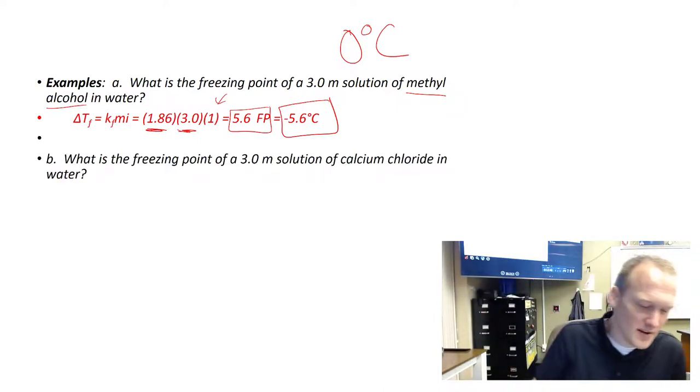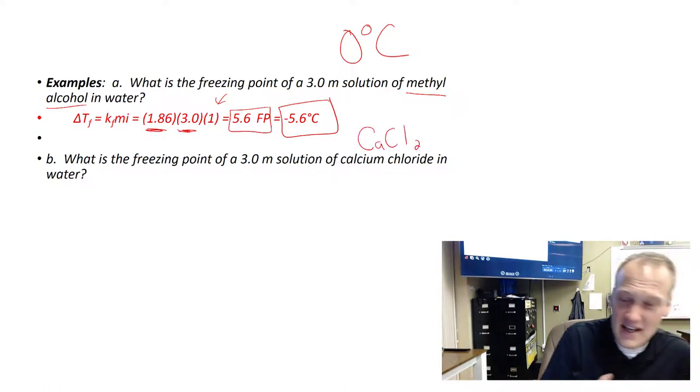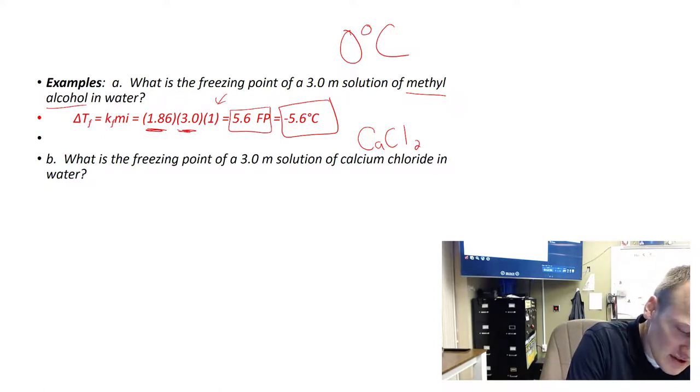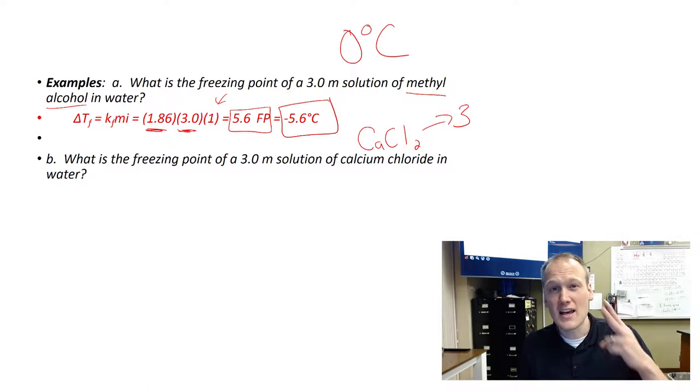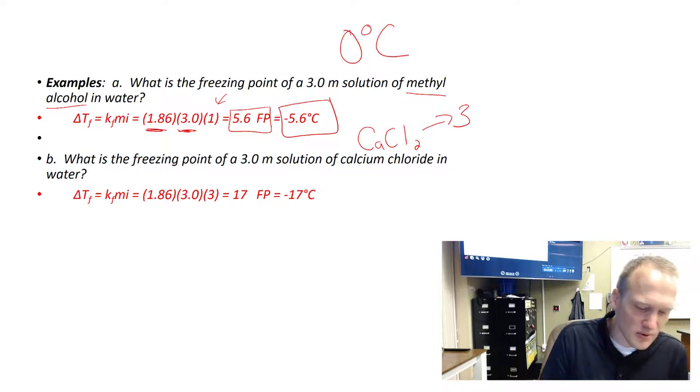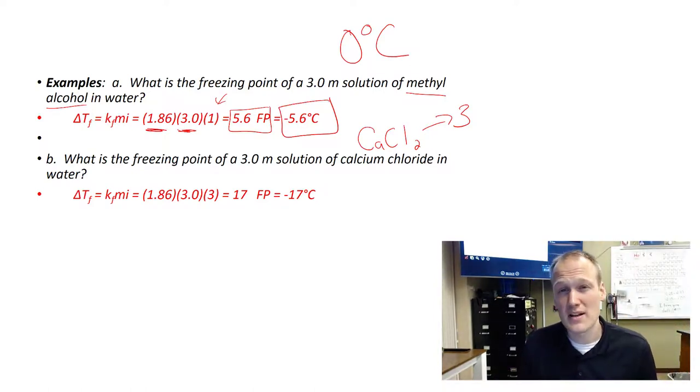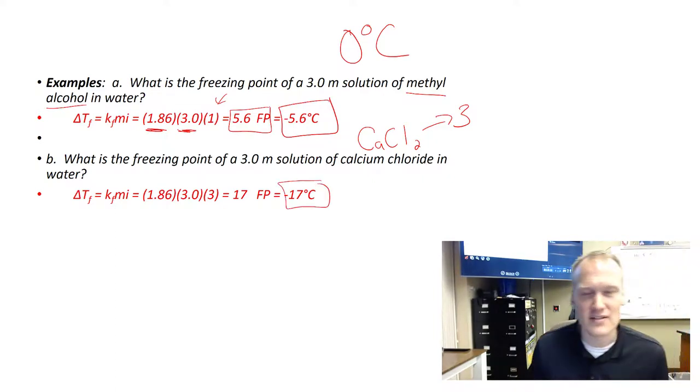Here's another example with calcium chloride. It's important to write the formula, calcium chloride is CaCl2. This is going to be three particles: one calcium and two chlorine. We write out our equation, notice we put a 3 here because of the three particles calcium chloride produces. That's going to reduce our freezing point 17 degrees, all the way down to negative 17 degrees Celsius.